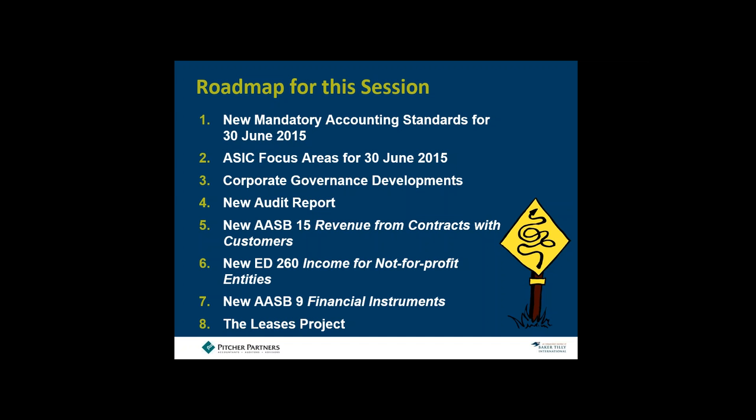In section six we look at not-for-profit entities and an ED on the application of AASB 15 to not-for-profits. Section seven covers the new AASB 9, briefly, as the mandatory application date is a number of years away. Section eight provides an update on the leases project — we don't have the new standard yet, expecting it by end of year or early next year, with an application date three to four years away. If you have questions, please send them to the question box on the right-hand side.